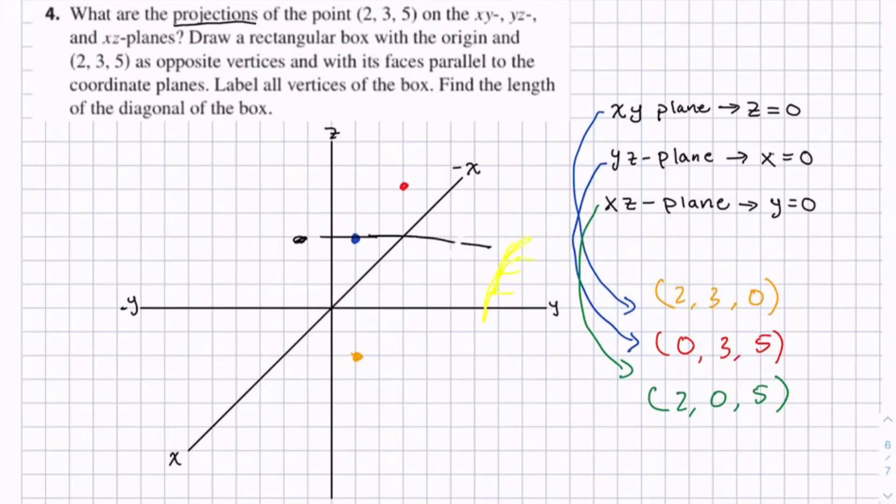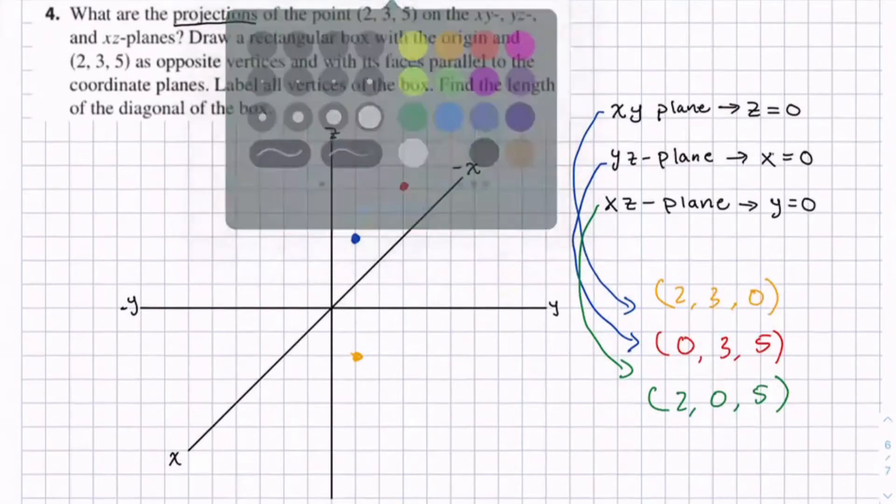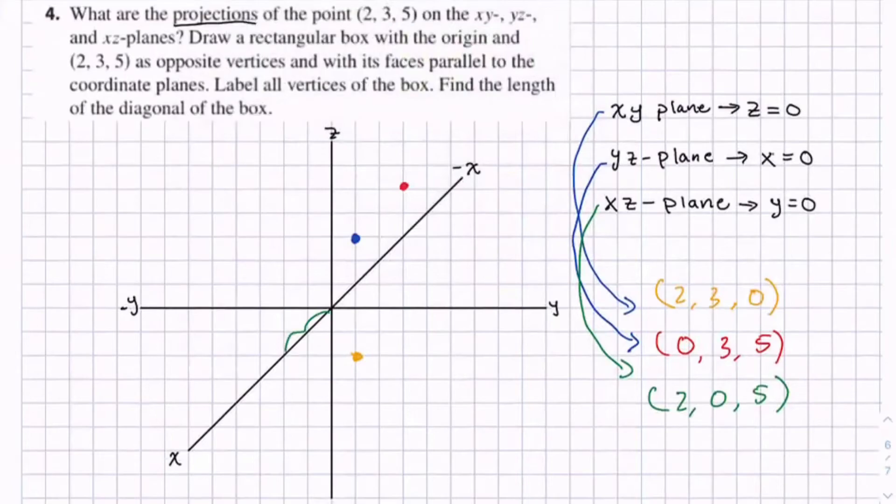So if we draw this point: 2, nothing on the y, up 5.